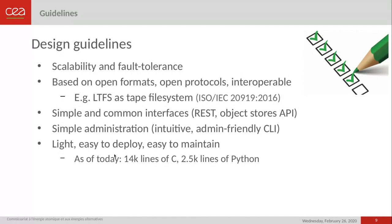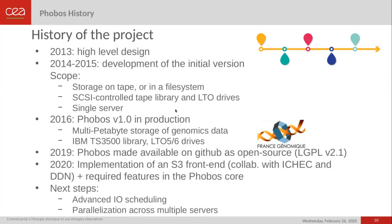The software is lightweight, easy to deploy, and easy to maintain. Looking at the project history, we began design in 2013. The first version was developed from 2014 to 2015 and put into production in 2016. We open-sourced it last year, and in 2020 we developed an S3 frontend in collaboration with DDN and ISHEC — the Irish Centre for High-End Computing. I will detail the next steps in a few slides.